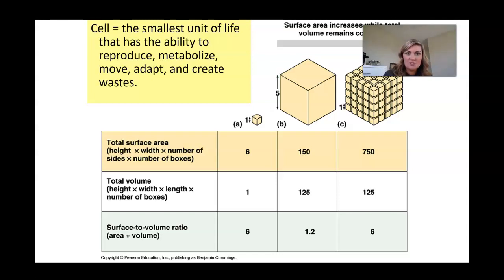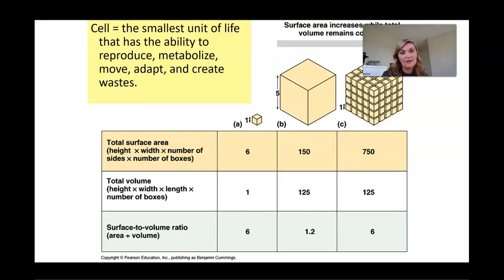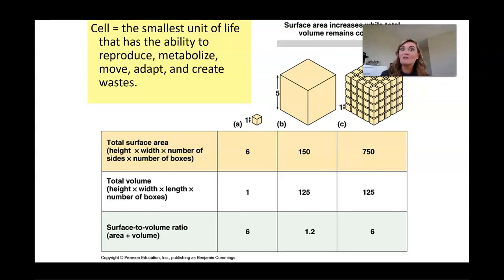With this surface-to-volume ratio, it's very important that we have a lot of surface area. When a cell produces its waste products, or if it needs to get substances into the cell to perform metabolic functions, it needs to get that across the cell membrane very quickly. The larger that cell is, the more area it has to cover to get things in and out. So the smaller the cell, the better — it will be way more efficient.